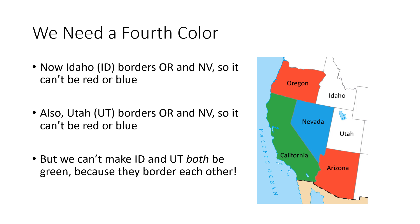Now let's look at Idaho and Utah. Idaho borders Oregon and Nevada, so Idaho can't be red or blue — but it could be green since it doesn't share a border with California. Utah shares a border with Nevada, so it can't be blue. Utah shares a border with Arizona, so it can't be red. And Utah also shares a border with Idaho, so it can't be green. We've used up all three colors, so we need a fourth color for Utah — maybe orange. Sometimes we're forced to use a new color.